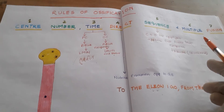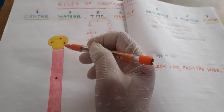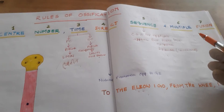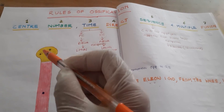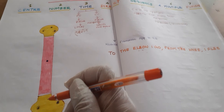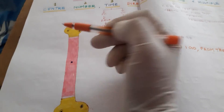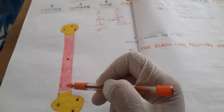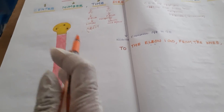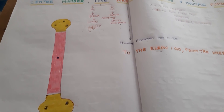The seventh rule is about fusion. In the case of long bones in males, the growing end fuses with the diaphysis at 20 years, and the non-growing end fuses 2 years earlier — at 18 years. In females, the growing end fuses at 18 years, and the non-growing end at 16 years. For epiphyses of bones other than long bones, fusion occurs between 20 to 25 years. These are the rules of ossification.